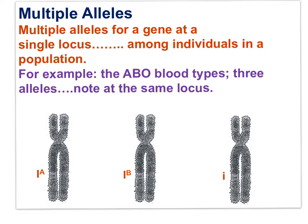Let's move on to a new heredity pattern: multiple alleles. Multiple alleles is defined as having more than two alleles for one gene at a single locus. The three or more alleles would exist among individuals in a population, because any one individual has only two alleles for a gene. The ABO blood types are an appropriate example of multiple alleles. We can see three chromosomes each displaying a different allele for blood type at the exact same locus. There are six possible genotypes.